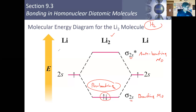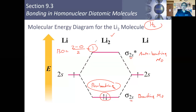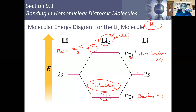Calculating the bond order for Li2: 2 bonding electrons minus 0 anti-bonding electrons, divided by 2, gives a bond order of 1 — the same as hydrogen. So diatomic lithium should be a stable molecule, just like diatomic hydrogen. Based on molecular orbital theory and both criteria — pro-bonding state and bond order of 1 — this molecule should exist and be found in nature.